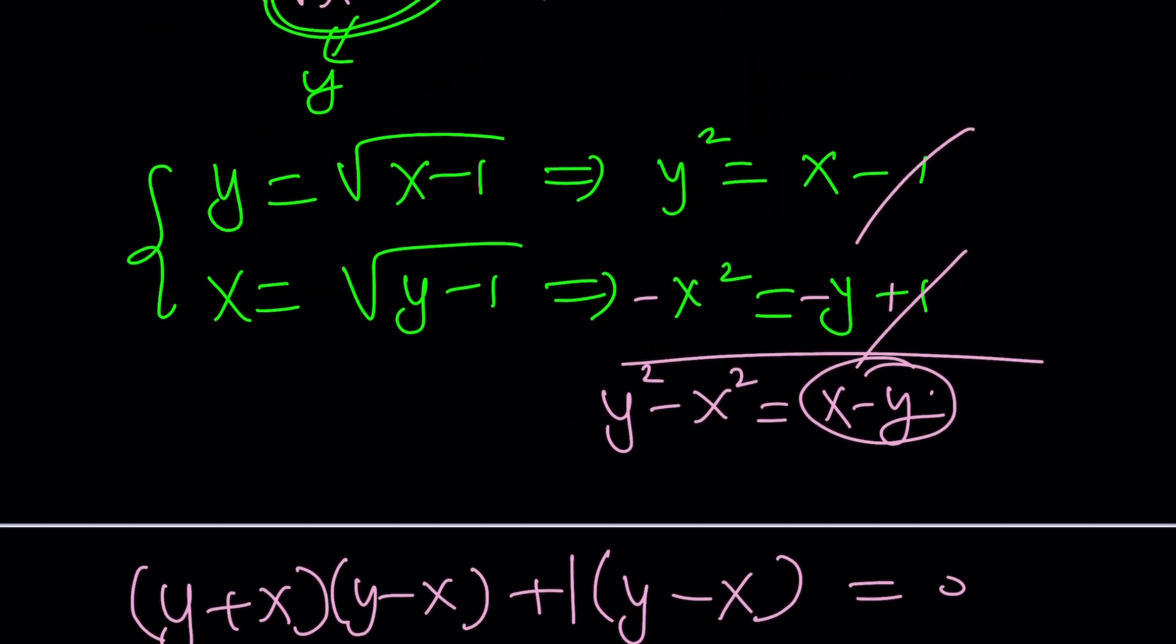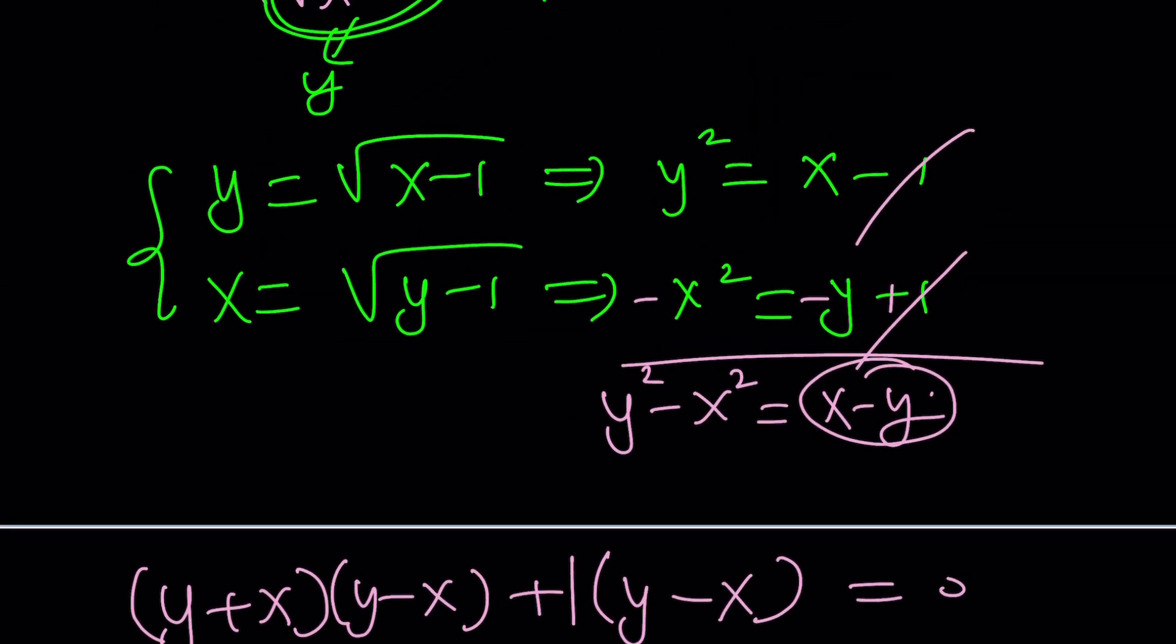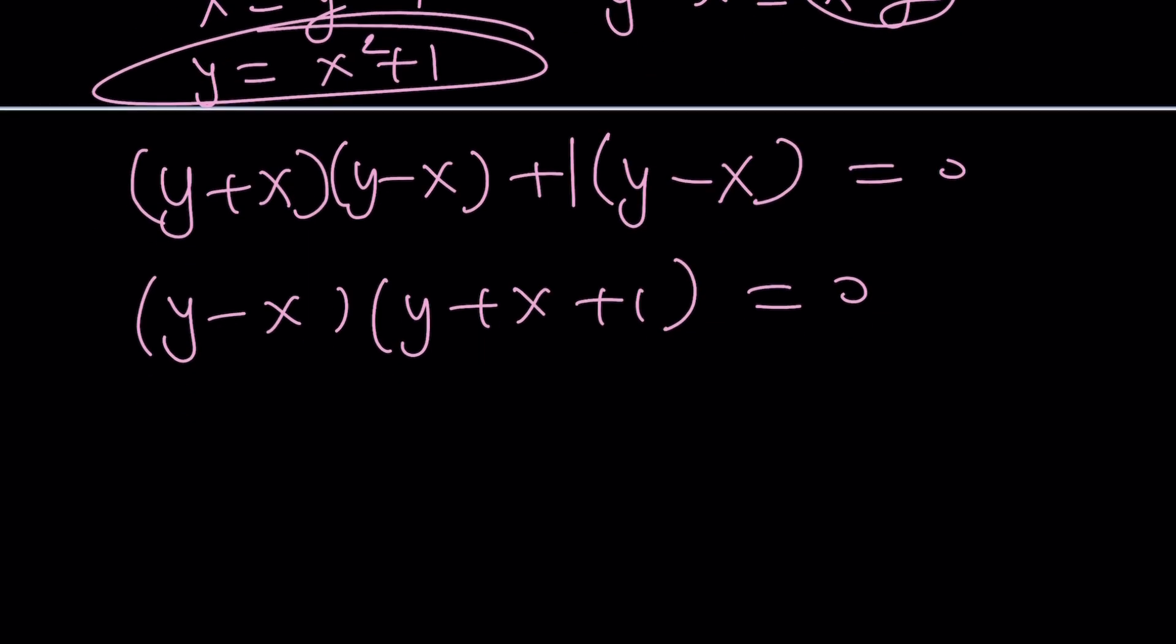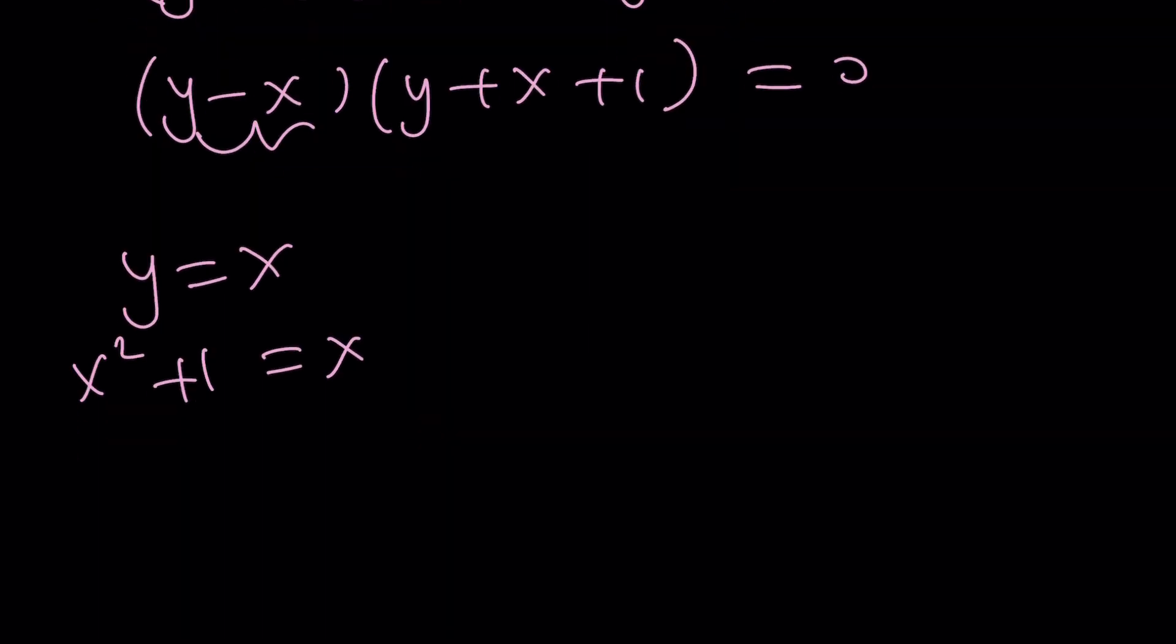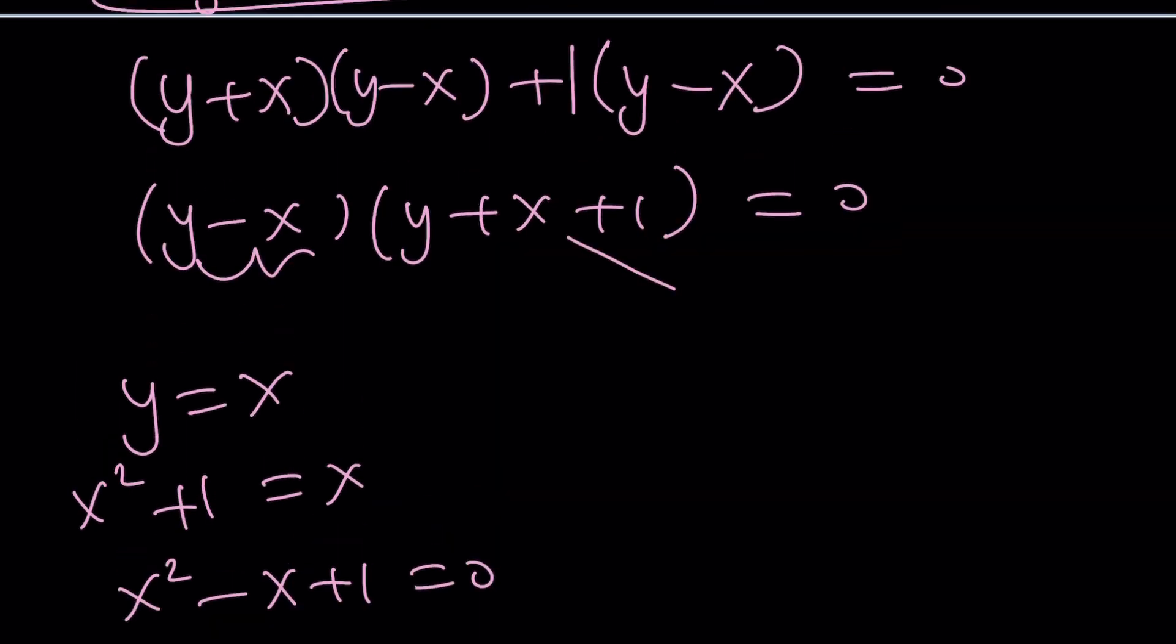Now remember, y is equal to what? That's a good question. I think y, x equals y, x squared equals y minus 1. So y is equal to x squared plus 1. Good. So let's go ahead and replace. From here, we get y equals x. And if y is equal to x squared plus 1, x squared plus 1 equals x. And then you get x squared minus x plus 1 equals 0. We're going to get to that. Let's go ahead and look at the other solution.